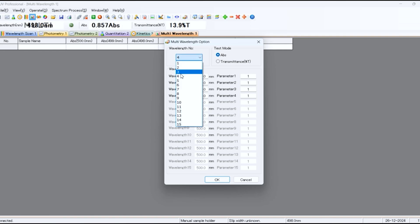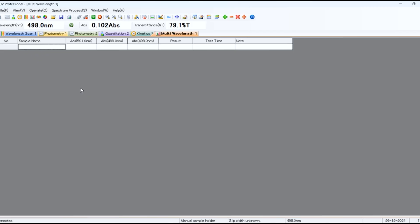Select multi-wavelength and input multiple wavelengths. Blank the system, insert the sample and click start test.